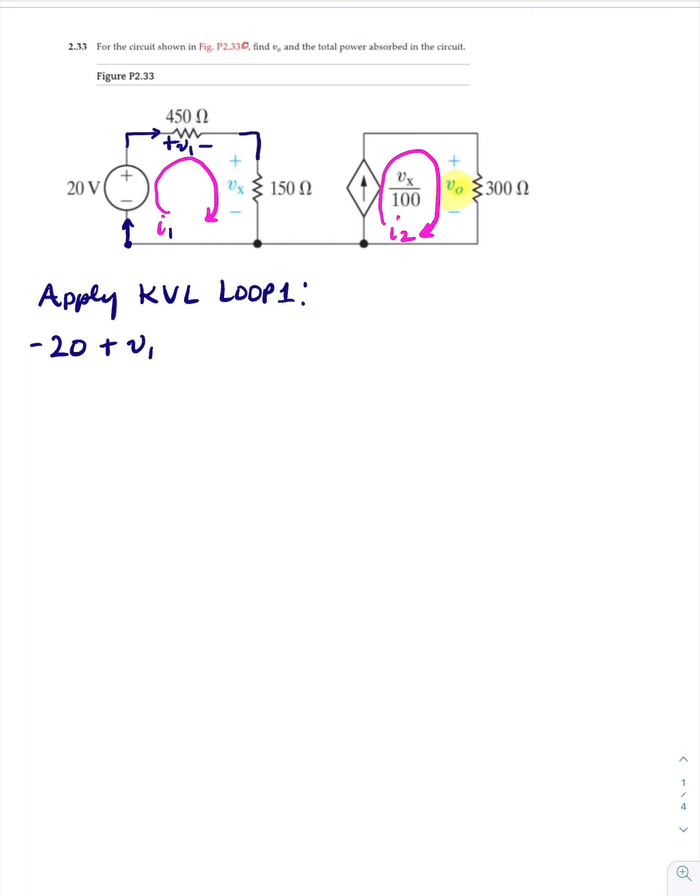Then we come down to this resistor, entering through the positive terminal. So plus V sub X is equal to zero. We have two unknowns, one equation.